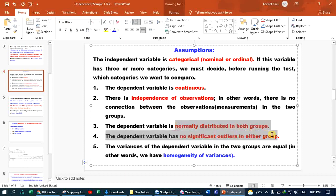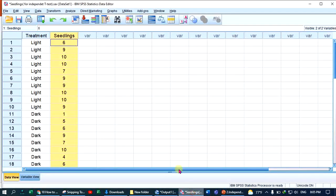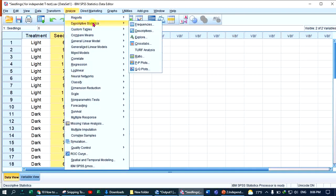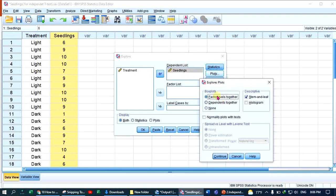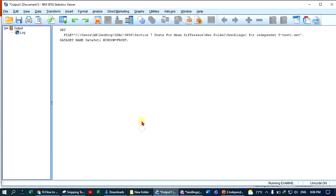Assuming this information is collected from independent observations, let us check normality. Click on Analyze, Descriptive Statistics, then Explore. Take the dependent variable seedling to the dependent list. Then click on Plots, normality plots with tests to produce the graph and histogram.